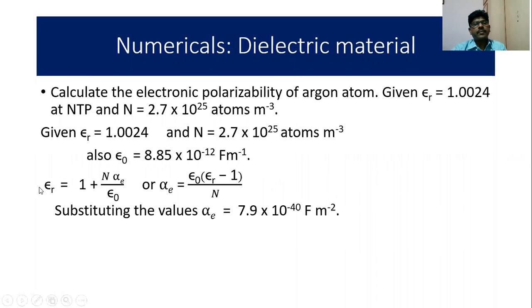After seeing the applications, we can see some numericals based upon dielectric materials. The problem is calculate the electronic polarizability of argon atom. Given εᵣ = 1.0024 at NTP and N = 2.7 × 10²⁵ atoms per meter cube. So this is the data given.